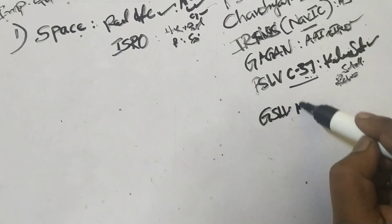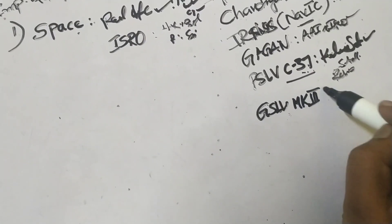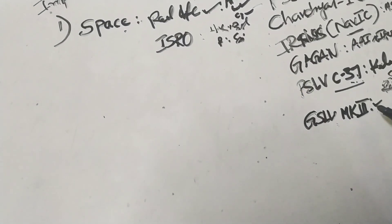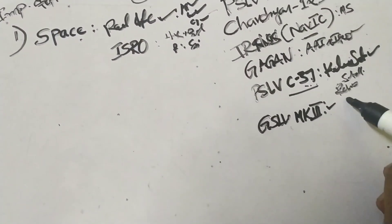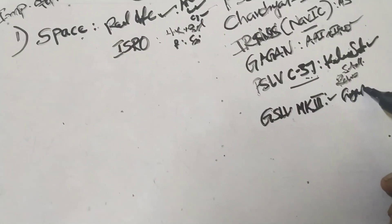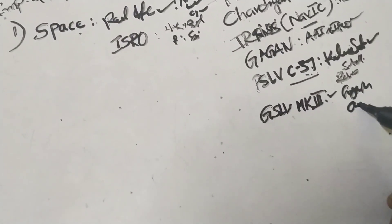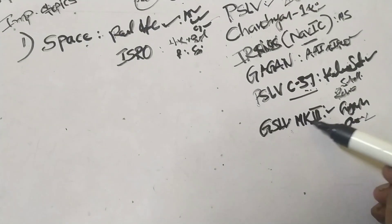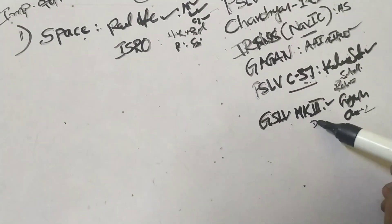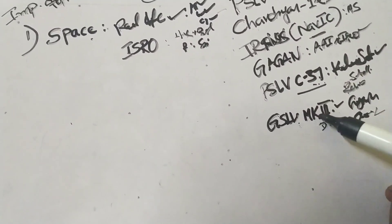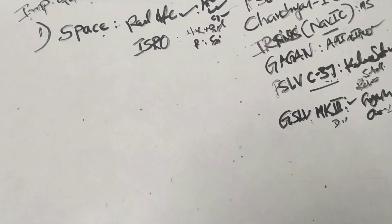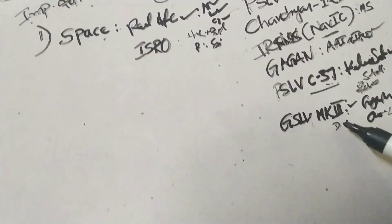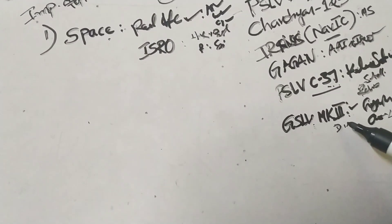GSLV MK3 is used for launches. It includes missions D1 and D2. GSLV MK3 is an important objective feature sent for major payloads. This is the most important concept.